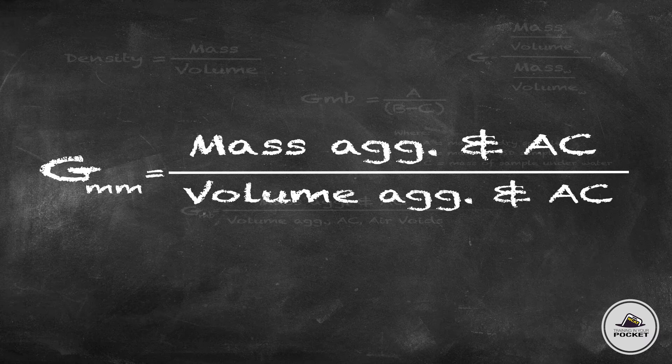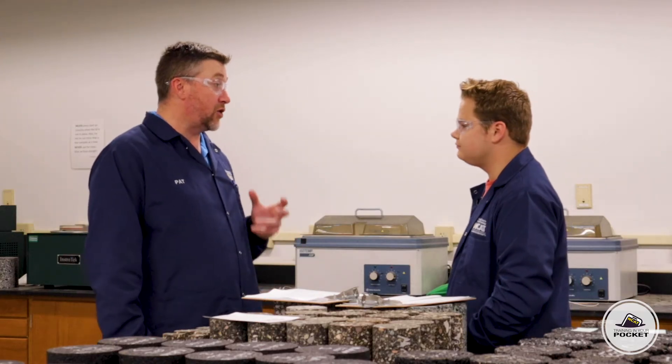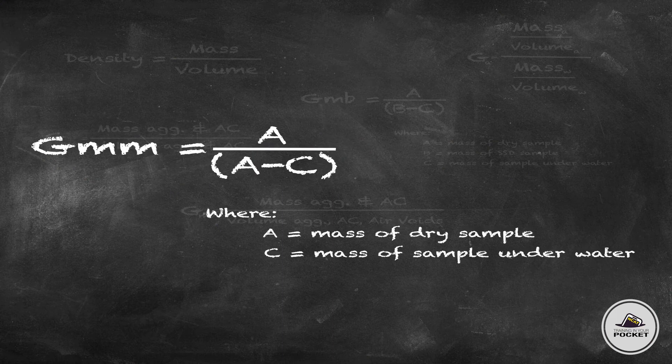But for the maximum specific gravity, we're going to take the mass of the asphalt binder and aggregate and divide it by the volume of the aggregate and binder. That's similar to the bulk. It is, but with this one there's no volume of air. So in practice we're going to take the dry mass and divide that by the dry mass minus the mass underwater.